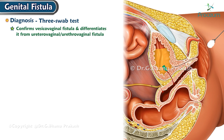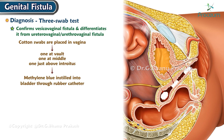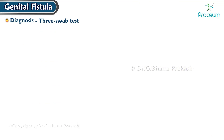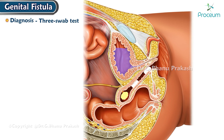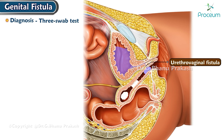Three swab test: This not only confirms vesicovaginal fistula but also differentiates it from ureterovaginal and urethrovaginal fistula. Three cotton swabs are placed in the vagina — one at the vault, one at the middle, and one just above the introitus. Methylene blue is instilled into the bladder through a rubber catheter and the patient walks for about five minutes. If the uppermost swab is soaked with urine but unstained with dye, it indicates a ureterovaginal fistula. If the upper and lower swabs remain dry but the middle swab is stained with dye, it signifies a vesicovaginal fistula. If the upper two swabs stay dry while the lower swab is stained, it suggests a urethrovaginal fistula.